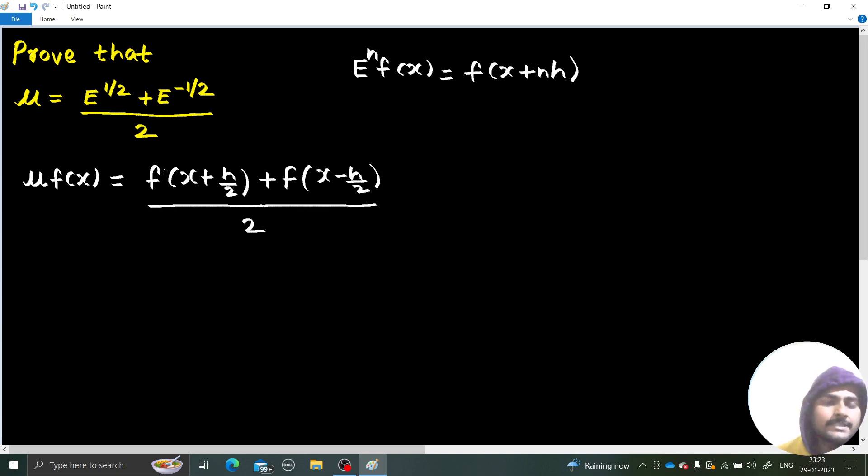Now you know this f of x plus h by 2 can, with the help of this idea of shift operator, be written as E power half fx, because E power half fx can be written as f of x plus h by 2.